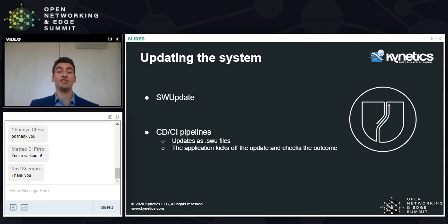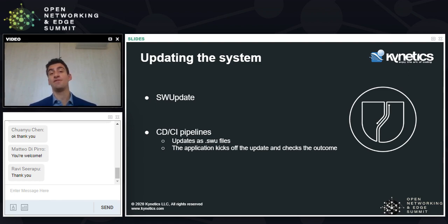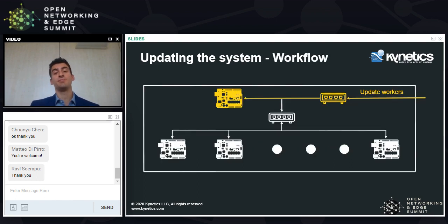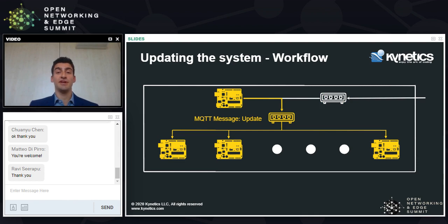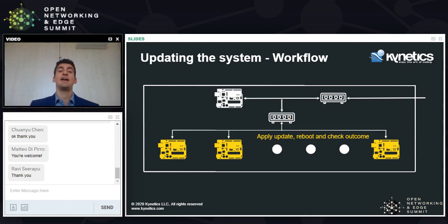After the update completes, the application can check the outcome by looking at environment variables. We can build fully automated pipelines with two repositories — one for the application and one for the OS — where each push to the master branch triggers the pipeline. As a first step, the pipeline builds the SWU file from the latest commit and triggers the coordinator's update endpoint. The coordinator receives the HTTP request, creates and publishes an MQTT message so all workers can receive it. The workers receive the message, download the SWU file, perform integrity and sanity checks, and kick off the update.